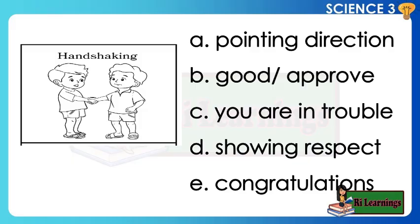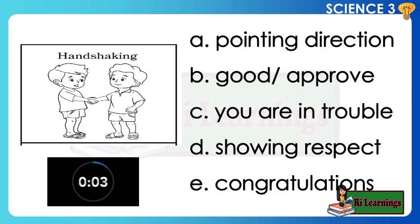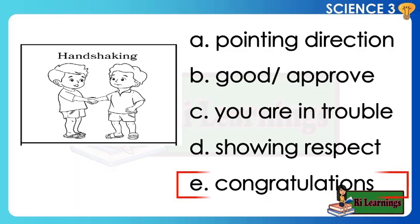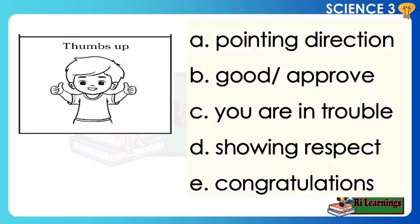Handshaking: A, pointing direction; B, good approve; C, you are in trouble; D, showing respect; E, congratulations. Thumbs up: A, pointing direction; B, good approve; C, you are in trouble; D, showing respect; E, congratulations.